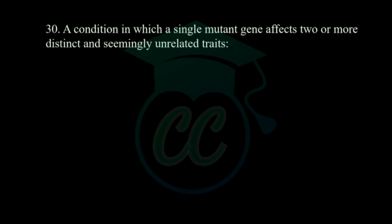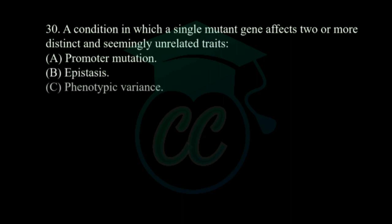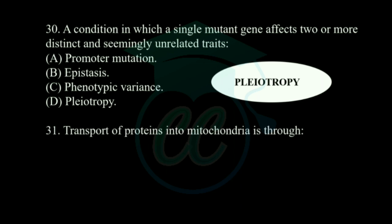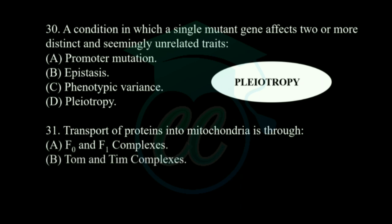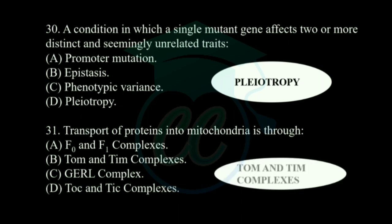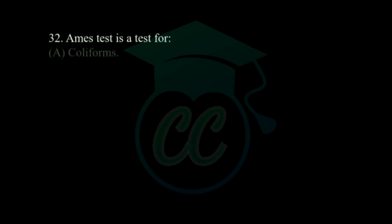Next question: a condition in which a single mutant gene affects two or more distant and seemingly unrelated traits — options: promoter mutation, epistasis, phenotypic variance, and pleiotropy. The correct answer is pleiotropy. Next question: the transport of proteins into mitochondria is through — options: F0-F1 complex, TOM-TIM complex, GERL complex, and TOCTIC complex. The correct answer is the TOM and TIM complexes.